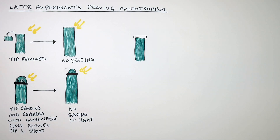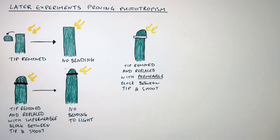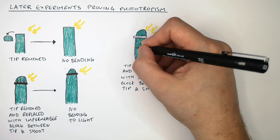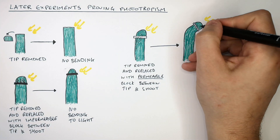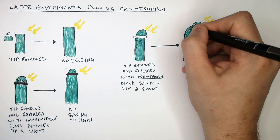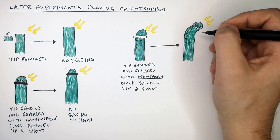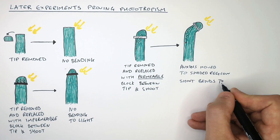In the last experiment, a permeable block was placed between the tip and the shoot — the tip was removed, a permeable block inserted, and the tip replaced back onto the shoot. Because the block was permeable, the auxins could move down from the tip to the shaded region of the shoot. This meant that the auxins could stimulate cell elongation in the shaded region, causing the shoot to bend towards the light.